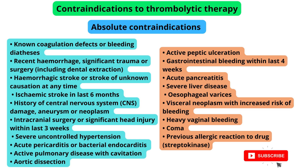Continued absolute contraindications: ischemic stroke in the last 6 months; history of CNS damage, aneurysm, or neoplasm; intracranial surgery or significant head injury within the last 3 weeks; severe uncontrolled hypertension; acute pericarditis or bacterial endocarditis; active pulmonary disease with cavitation; aortic dissection; active peptic ulceration; gastrointestinal bleeding within the last 4 weeks; acute pancreatitis; severe liver disease; esophageal varices; visceral neoplasm with increased risk of bleeding; heavy vaginal bleeding; coma; previous allergic reaction to the drug (Streptokinase).